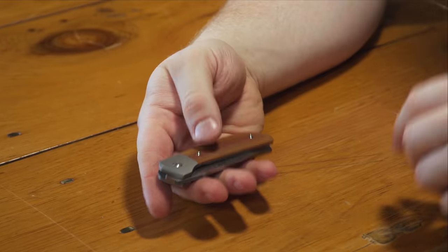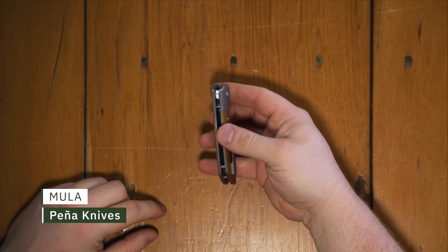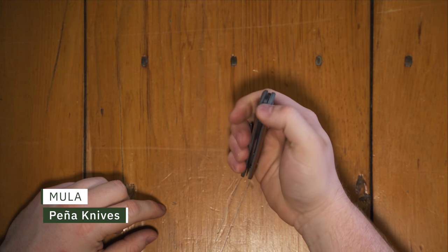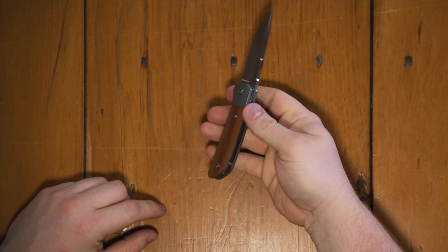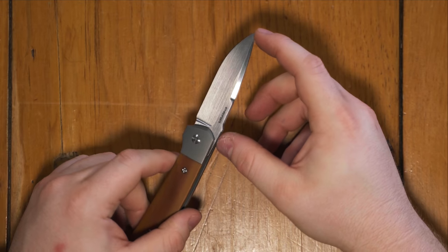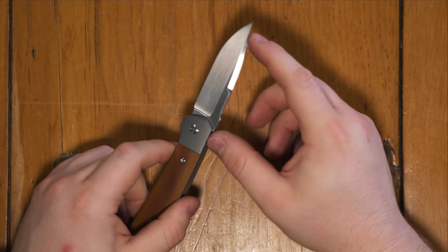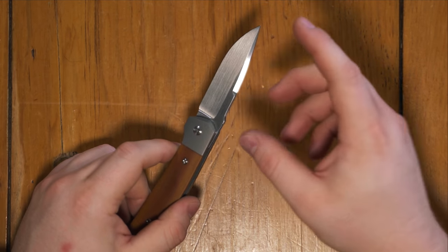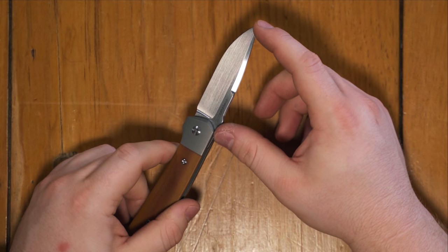Next up, we have another recent pickup. This one was from Blade Show. This is another custom, but of course this time, this is Pena. This is a custom Moolah and much smaller than the production Moolahs. So the blade on this one is a 2.875 inch CPM 154 drop point.